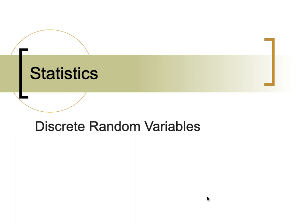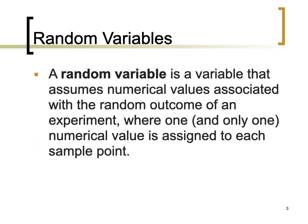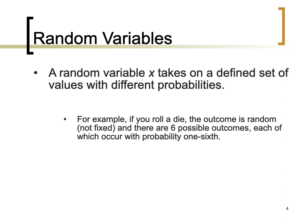We're going to introduce the concept of discrete random variables. We expect to develop the notion of a random variable, numerical data, and discrete random variables and their corresponding probabilities. A random variable is defined as a variable that assumes numerical values associated with the random outcome of an experiment, where one and only one numerical value is assigned to each outcome or sample point. We denote the random variable using x, which takes on a defined set of values with different probabilities.